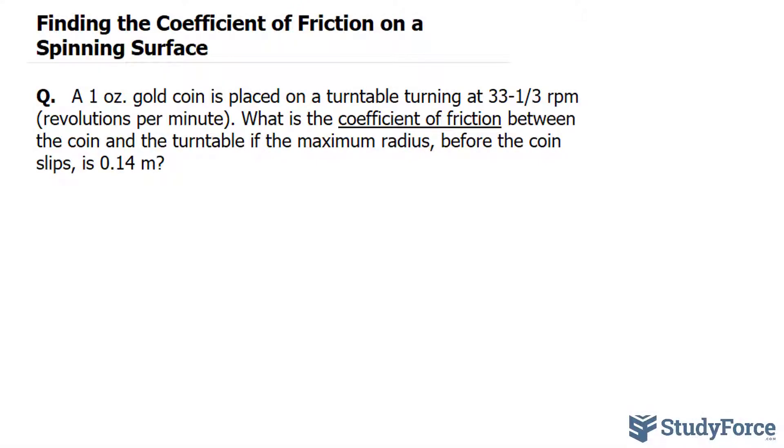Let's begin with an illustration. So let's take a cross section of the turntable. Let's say that this is the surface that's spinning and here's the coin and that is the center of the turntable. As you can see, this coin will be exerting a force downwards due to gravity.